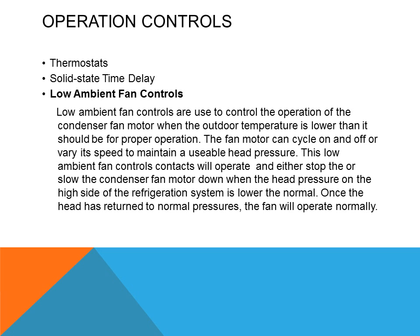Low ambient fan controls are used to control the operation of the condenser fan motor when the outdoor temperature is lower than normal for proper operation. The fan motor can cycle on and off or vary its speed to maintain a usable head pressure. When the head pressure on the high side of the refrigeration system is lower than normal, the control will stop or slow the condenser fan motor. Once head pressure returns to normal, the fan will operate normally.